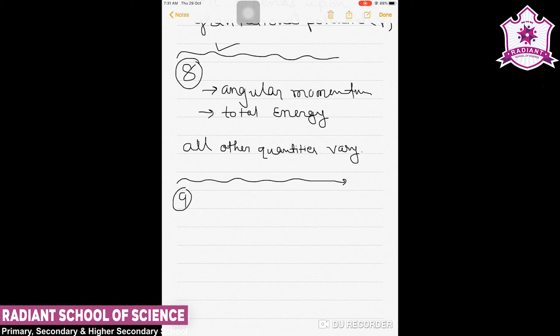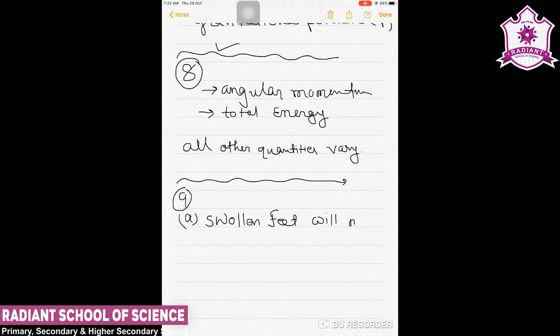Example number nine: which symptoms are likely to affect an astronaut in space — swollen feet, swollen face, headache, or orientational problem? Regarding swollen feet: legs carry the weight of the body in normal position due to gravity. The astronaut is in a weightlessness state in space, and hence swollen feet may not affect their working due to weightlessness.